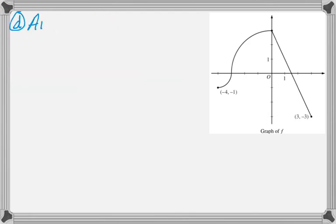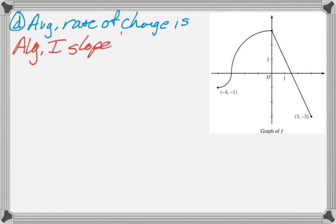And then finally, we're asked something about average rate of change. If at this point you don't know that average rate of change is algebra 1 slope, I don't know what you've been doing. But anyway, average rate of change is just algebra 1 slope.